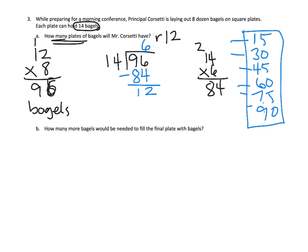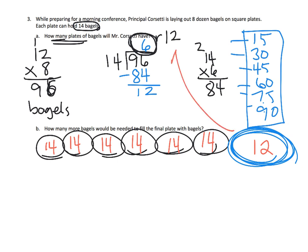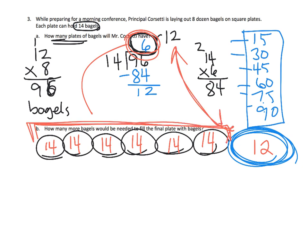So how many plates of bagels will Mr. Corsetti have? Well, he's going to have 6 completely filled plates. So he's going to have 1, 2, 3, 4, 5, 6 plates. And inside each plate, or on each plate, he's going to have 14 bagels. And then he's going to have 1 more plate, but that plate is only going to have 12 bagels. That's what this remainder 12 is. So the 6 is telling us that we're going to have 6 completely full plates and the 12 is saying we're going to have 12 bagels left over. So the question here is, how many more bagels would be needed to fill that last plate? We would need 2 extra bagels.